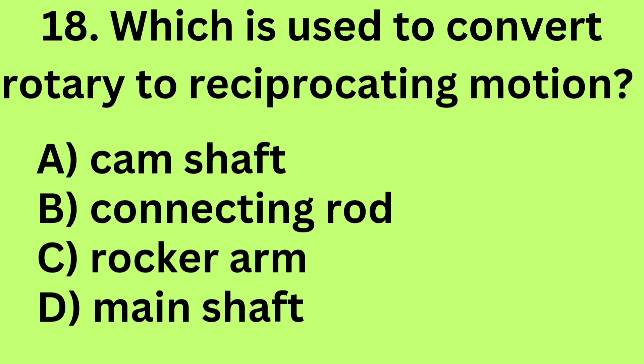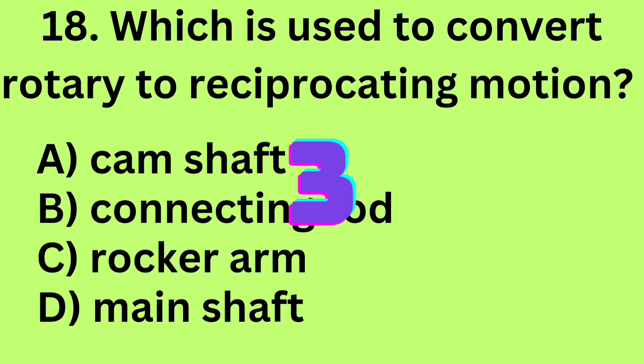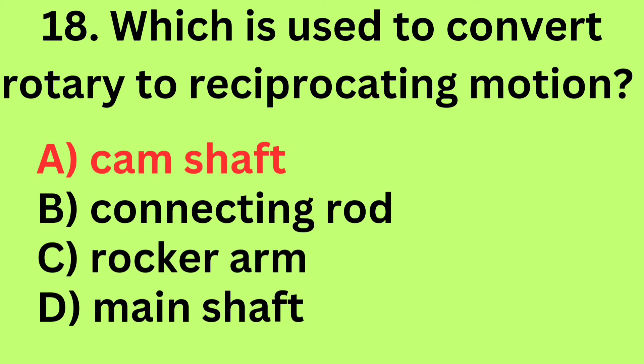Question 18: Which is used to convert rotary to reciprocating motion? A. Cam shaft, B. Connecting rod, C. Rocker arm, D. Main shaft. Answer: A. Cam shaft.